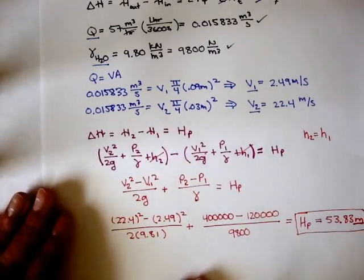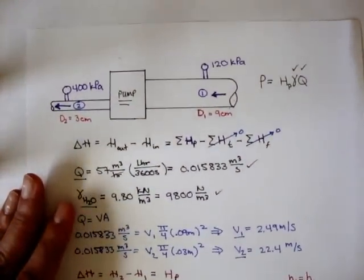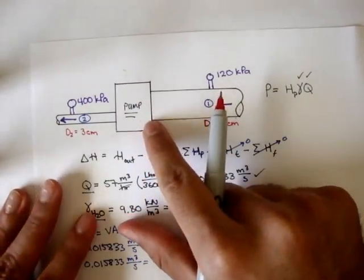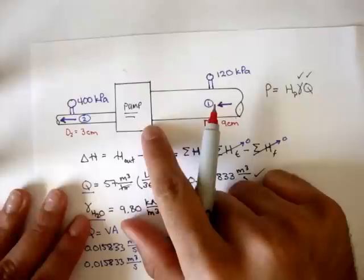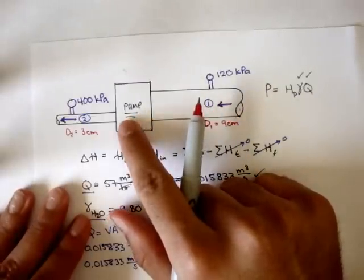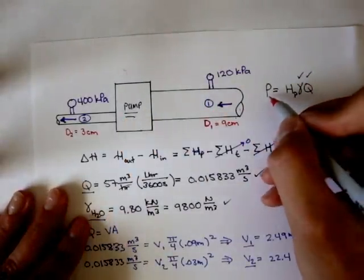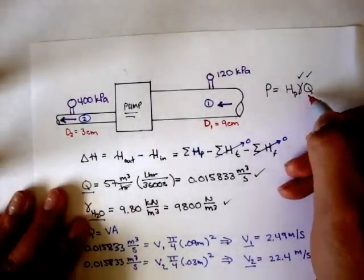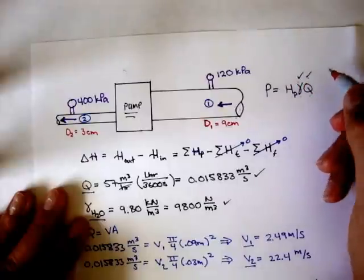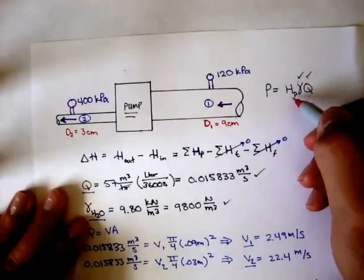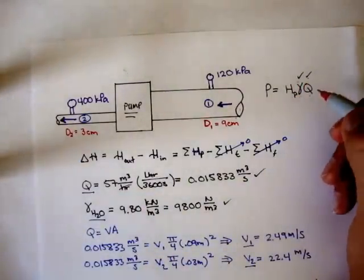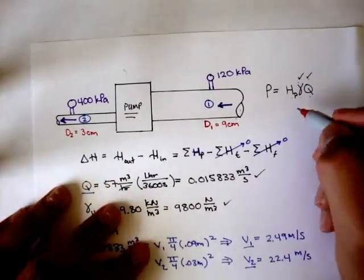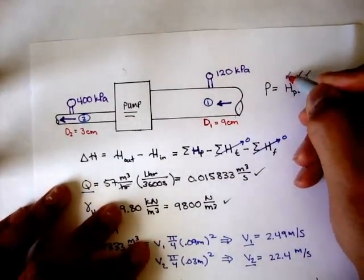Remember the question was asking what power in kilowatts is delivered to the water by this pump. In order to find the power, we needed the pump head, the specific weight of water, and the volumetric flow rate. We had the last two. Now we know our pump head is 53.83 meters.